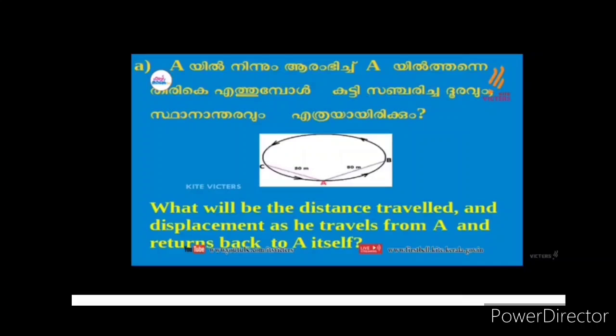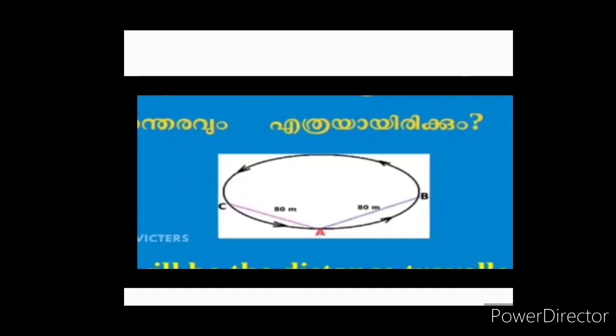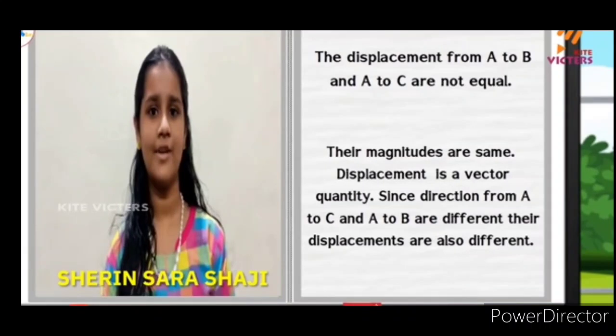That is the vector quantity. It is the same — we have the same displacement. The direction — what displacement is the same, all the answers are the same. But displacement from A to B and A to C are not equal. Their magnitudes are the same. Displacement is a vector quantity. Since the direction from A to C and A to B are different, their displacements are also different.